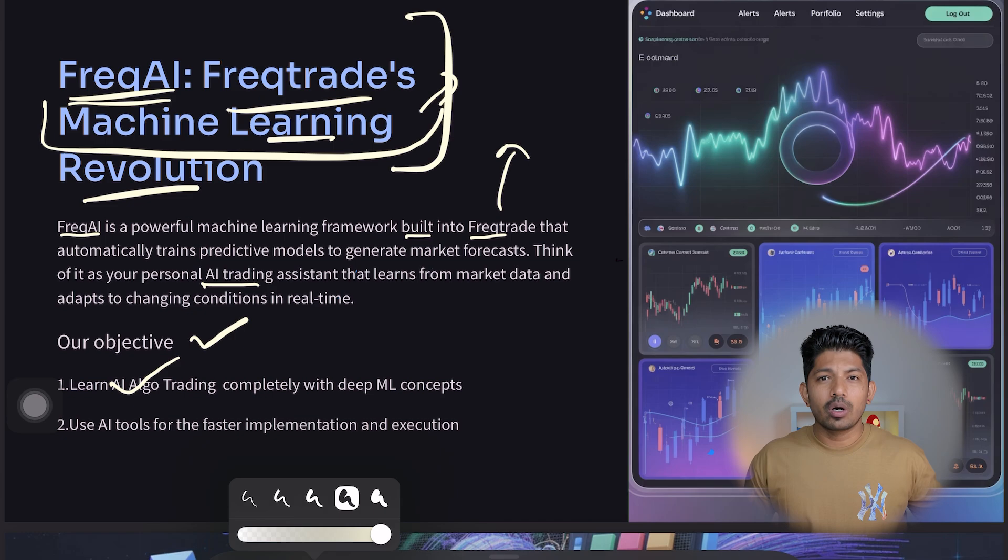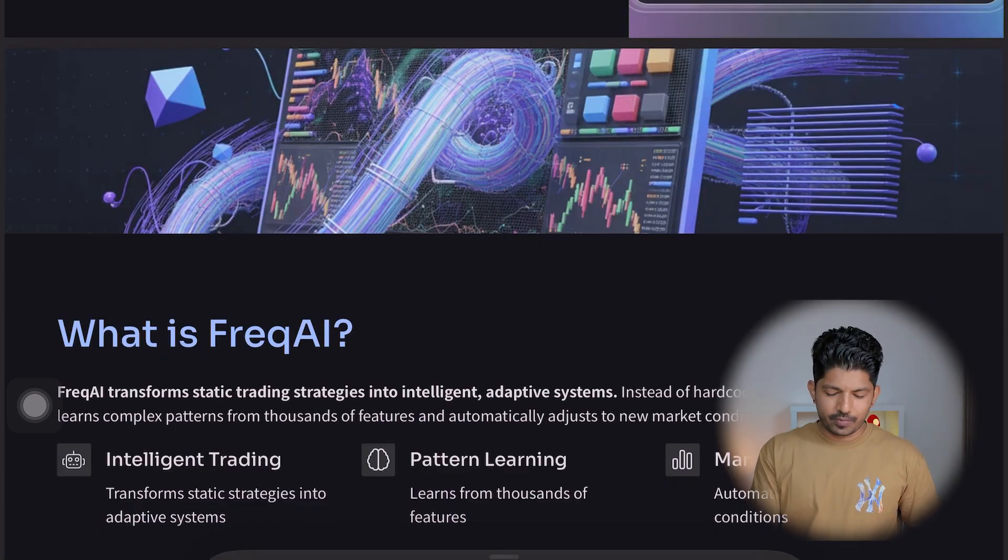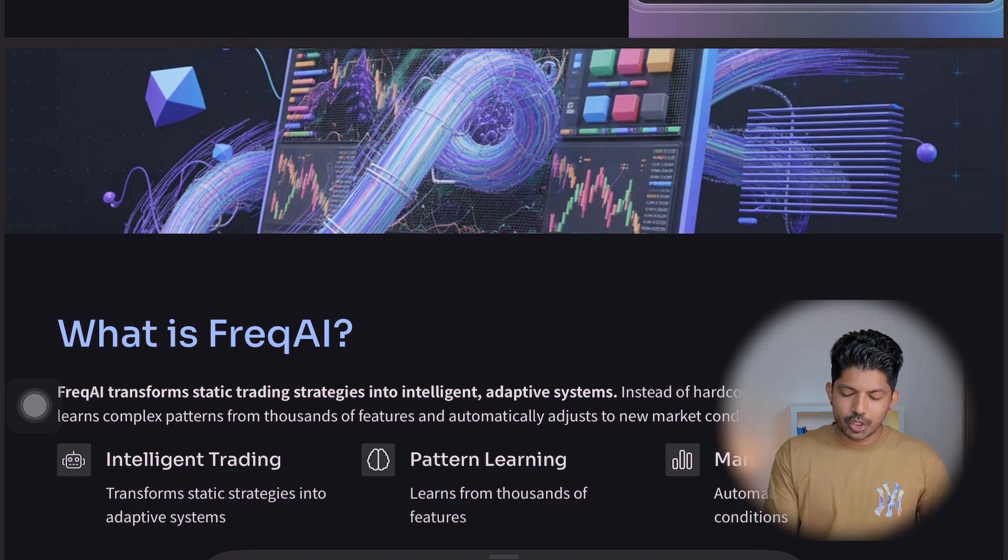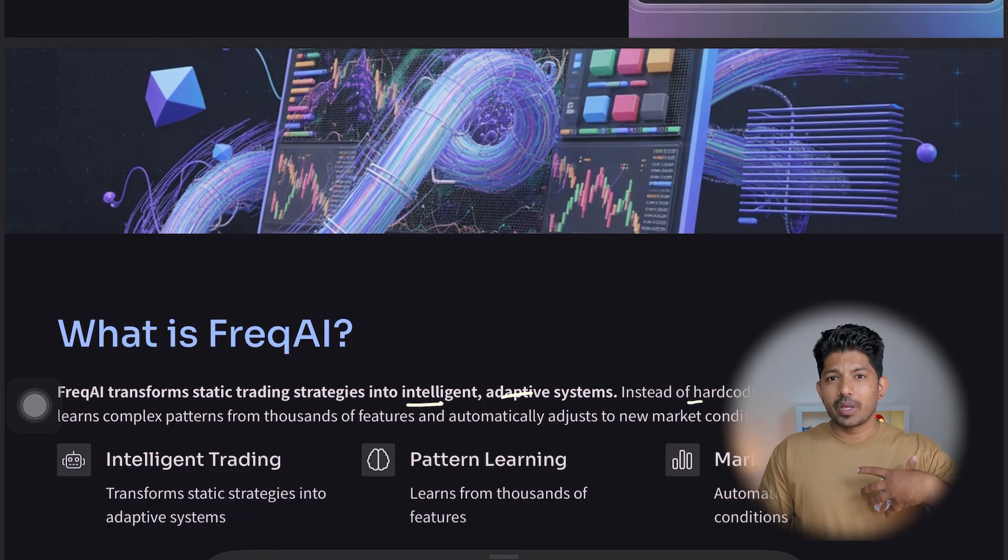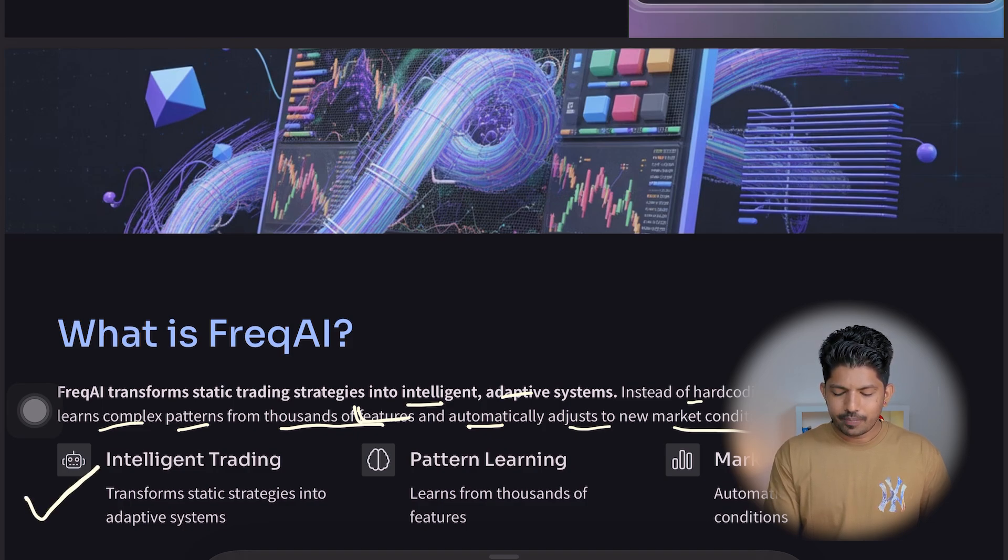FreqAI transforms static trading strategies into intelligent adaptive systems. Instead of hard-coding rules—like RSI should be less than 30 to buy or whatever the rules are—in machine learning algo trading, it automatically adapts with the situation. It automatically decides where to buy and where to sell. Before that, we have to give it enough data so it can make good trading decisions. Then it learns from complex patterns from thousands of features and automatically adjusts to new market conditions. We will be learning about features in detail in upcoming videos.